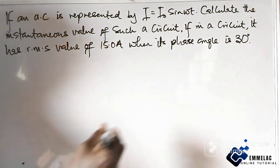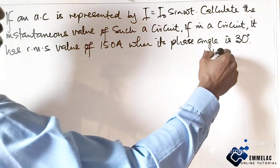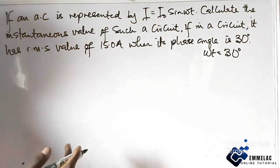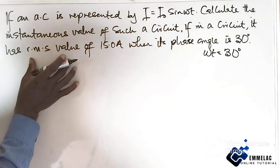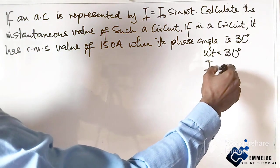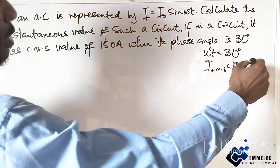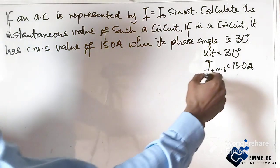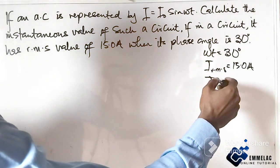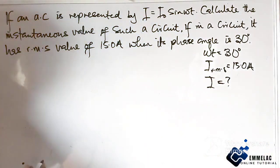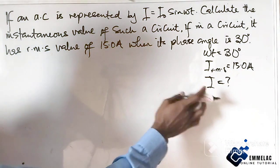Let us write out the parameters given. The phase angle which can be written as this is 30 degrees, whereas the root mean square value of the current is giving us 15.0 ampere, and we are asked to find the instantaneous current.